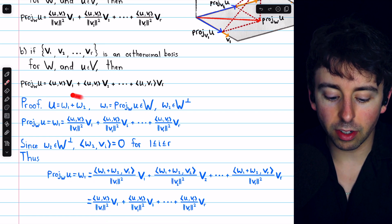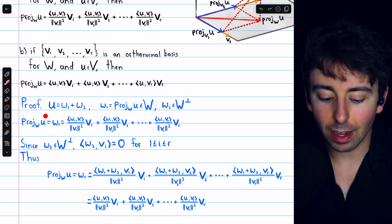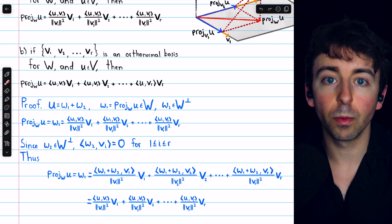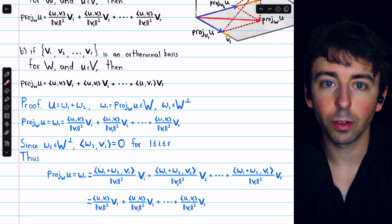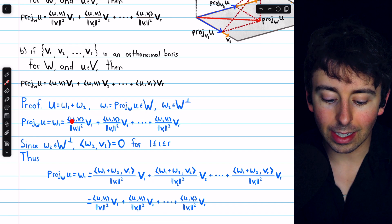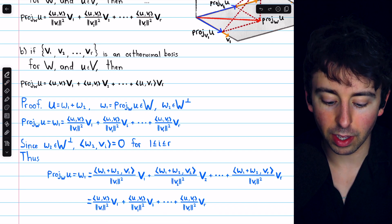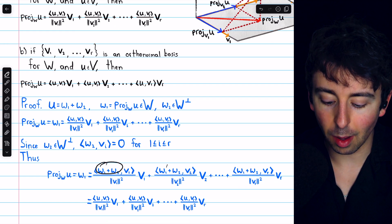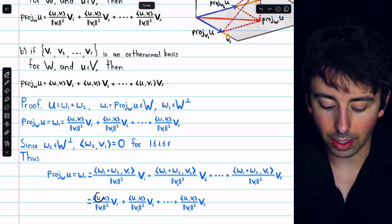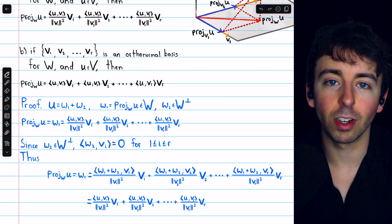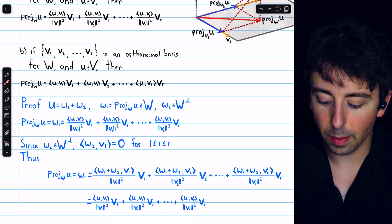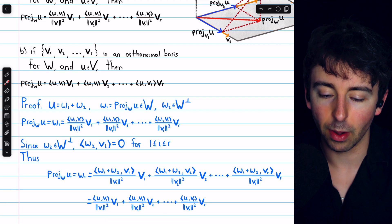Walking through this proof in a nutshell: we decomposed u with the projection theorem into a component that's in w and a component that's orthogonal to w. Then we expressed the component in w as a linear combination of the orthogonal basis vectors using a previously proven theorem. By adding w2 — which is from the orthogonal complement of w — in each of the first slots, we didn't actually change the value of the inner products, since w2 with v1, w2 with v2, and so on are all equal to 0. Then we replaced w1 plus w2 in the inner products with u, because u equals w1 plus w2, thus establishing the theorem. Part b is trivial: if the basis is orthonormal, all norms in the denominator are 1, and so we achieve part b without those denominators.